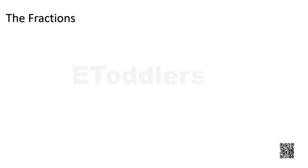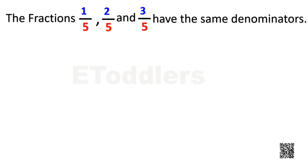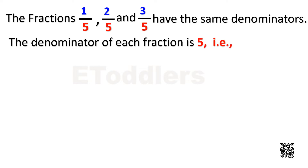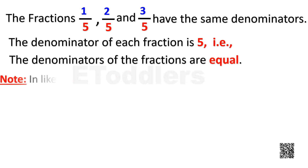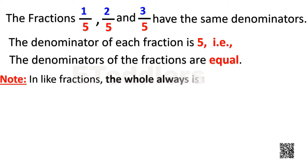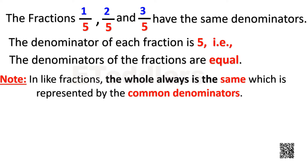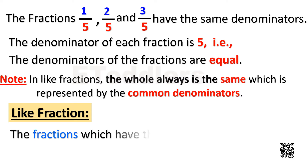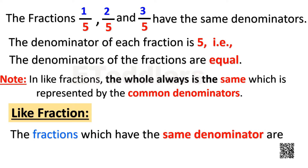The fractions 1 by 5, 2 by 5, and 3 by 5 have the same denominators. The denominator of each fraction is 5 — that is, the denominators of the fractions are equal. In like fractions, the whole is always the same, which is represented by the common denominators. The fractions which have the same denominators are called like fractions.